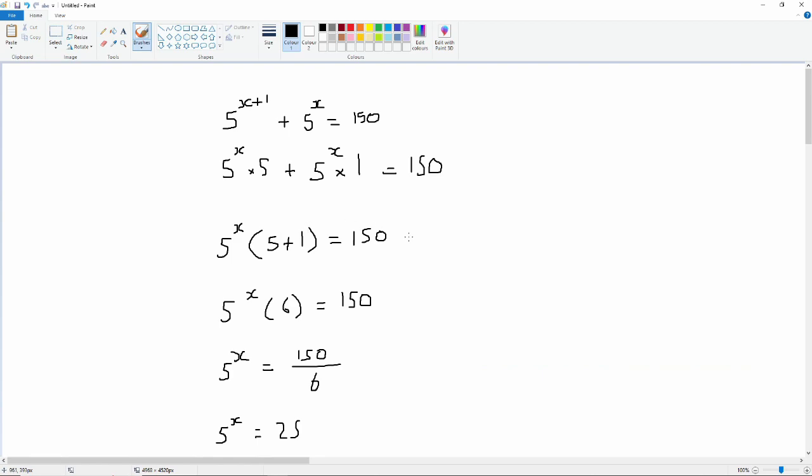So, what we have here is just factorization. We've got 5 to the power x multiplied by 5 and 5 to the power x multiplied by 1 and we're adding them together. So, if we pull out the 5 to the power x, what are we left with? Well, if we're taking the 5 to the power x away from 5 to the power x times 5, we're just left with the 5. And then we've still got the addition. And now, we've just got 5 to the power x times 1. So, when the 5 to the power x is pulled out, we're just left with the 1. And all that, of course, is equal to 150.